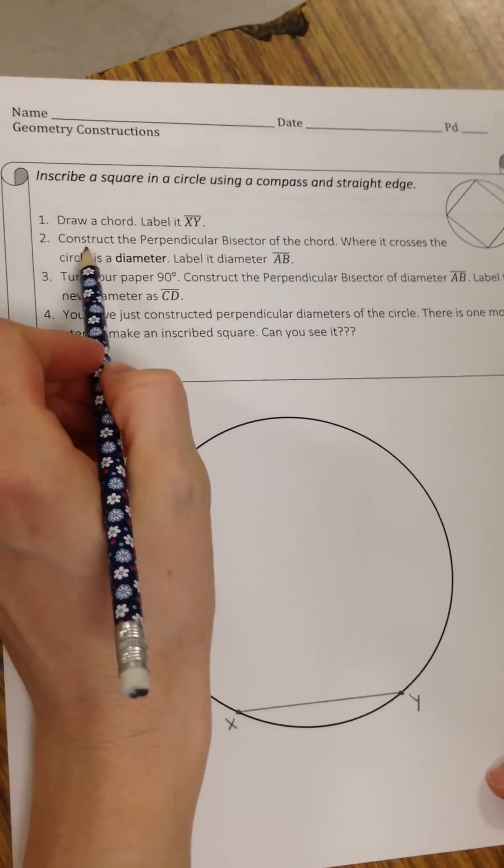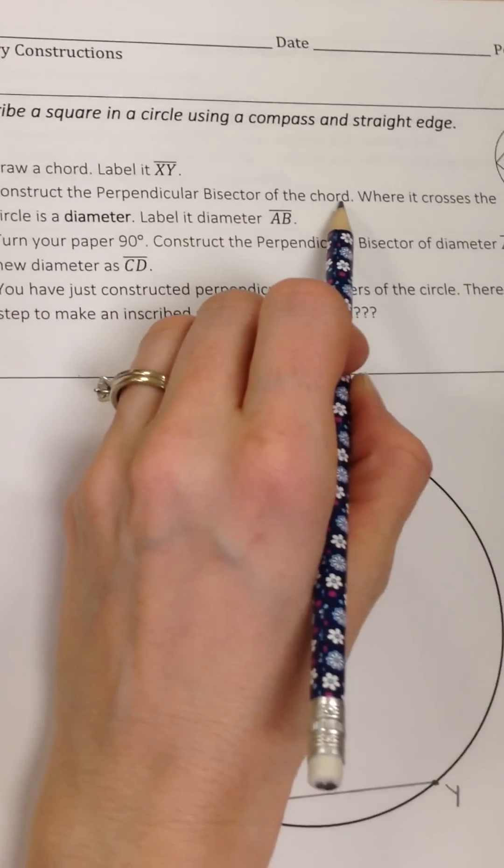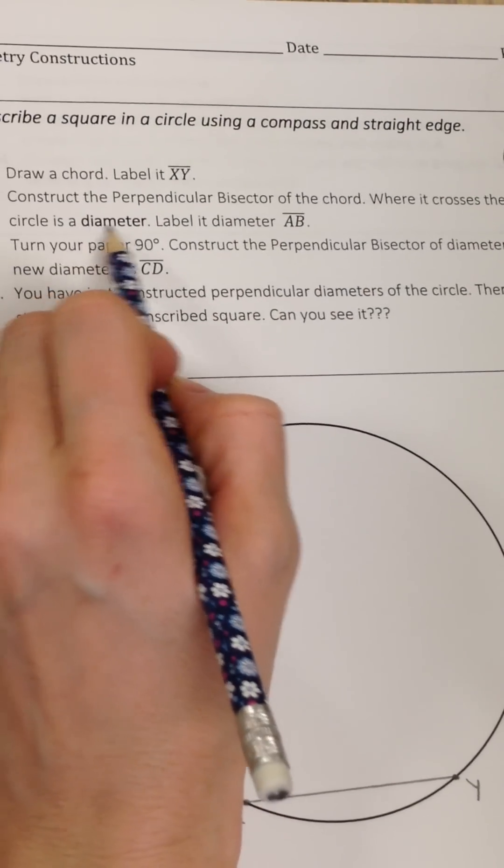Alright, let's look at the second step. We're going to construct the perpendicular bisector of the chord. Where it crosses the circle is going to be a diameter.